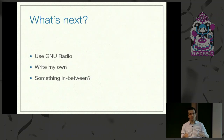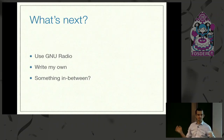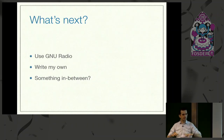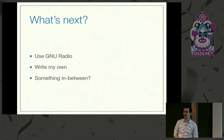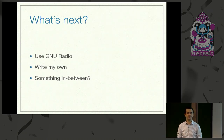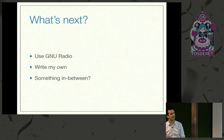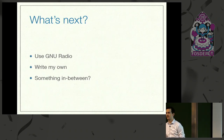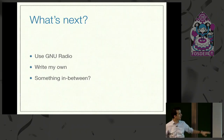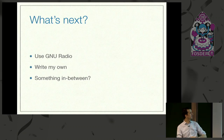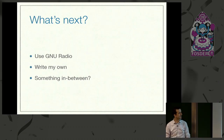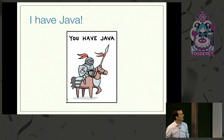My options were: use GNU radio — but that meant working with Python versions on my MacBook and feeling pain, essentially the same as what Satnox did. Or write my own DSP framework and spend five years debugging it. That's too time-consuming. Or maybe do something in between. And I did — I used Java.